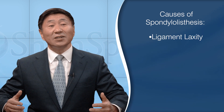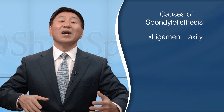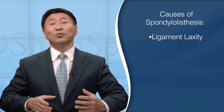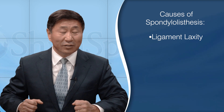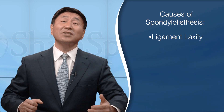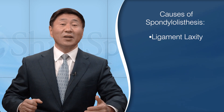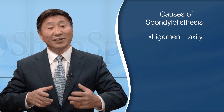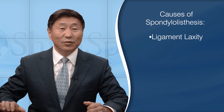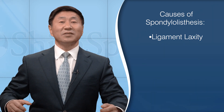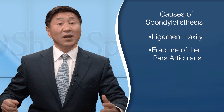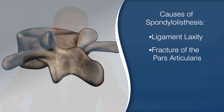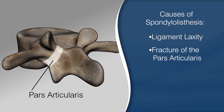Spondylolisthesis can be caused by ligament laxity or stretching that allows these vertebral rings to shift forward on one another. In addition, the discs have been compromised, also allowing this abnormal movement. Spondylolisthesis can also be caused by a fracture of the back of the vertebrae in the area called the pars articularis, resulting in the shifting of the vertebral rings onto one another.